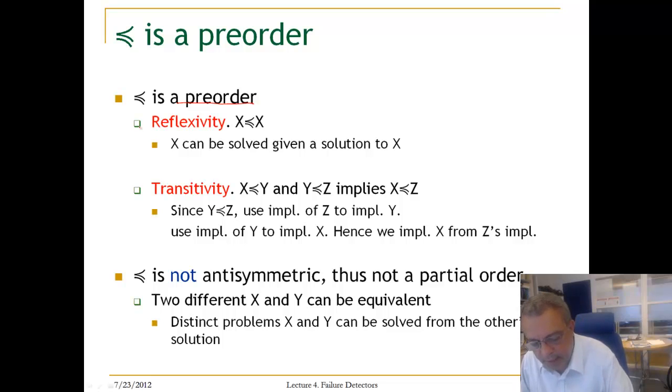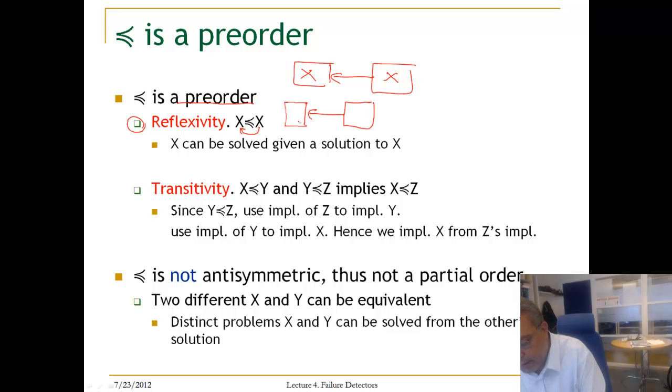Let us look to this again. It is reflexive. Given a solution of X, we can implement X. Reducibility is transitive, because given a solution of X using Y, and given a solution of Y using Z, then we can use the implementation of Y and Z to implement X. That is transitivity.